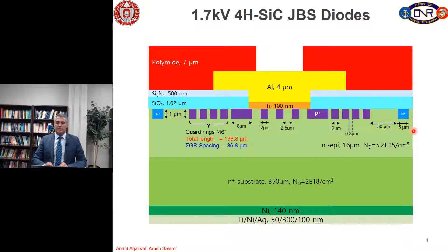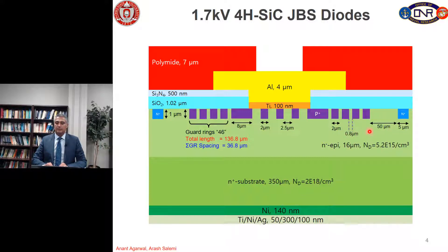Here is a cross-sectional view of 1.7 kilovolt silicon carbide JBS diodes. We talked about this cross-sectional view in the physics, simulation, and fabrication parts. We need P+ regions with a width of 2 micrometers and a distance of 2.5 micrometers in the active area, 2 micrometers width with a distance of 0.8 micrometers for the guard rings, and with 50 micrometer distance we have the N+ region for the channel stop with a width of 5 micrometers.